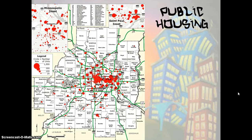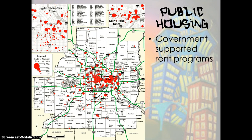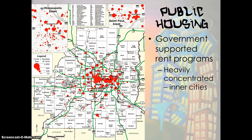Those in the inner city facing challenges such as inadequate job skills, the culture of poverty, crime, drugs, and homelessness have often turned to public housing. Public housing is defined as government-supported rent programs — some people receive a small amount of rent assistance, others have rent entirely covered. Public housing is heavily concentrated in inner cities, as shown on a map of Minneapolis and St. Paul indicating the number of subsidized housing units. However, several units are also appearing in outer suburbs as a way to promote equality of opportunity.